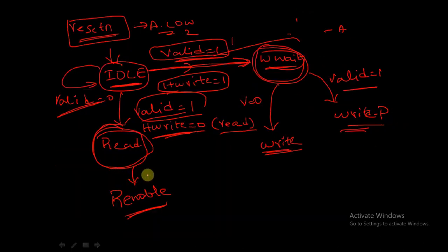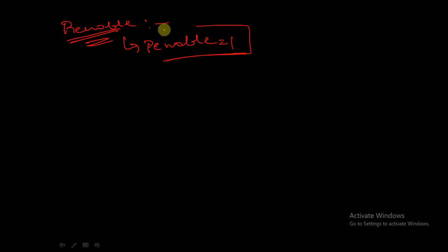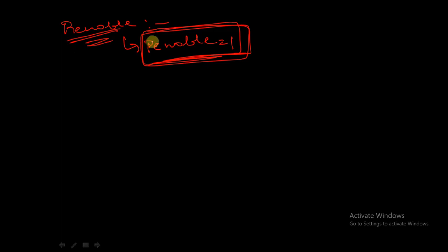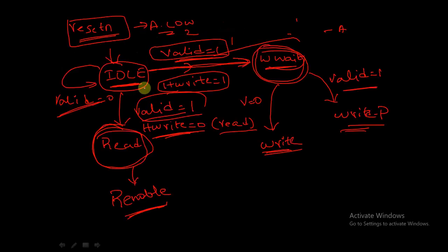Another state is REnable. We are directly entering from read state to REnable without any control signal. During this REnable state, the PEnable output is driven high, enabling the current APB transfer. All other APB outputs remain the same as the previous clock cycle. The PEnable signal is driven high so that the APB can start with the transfers.